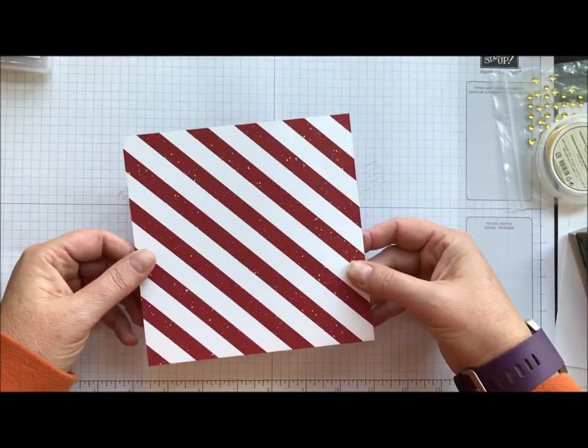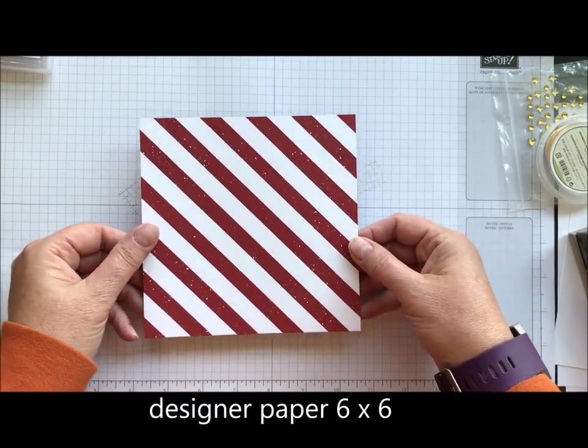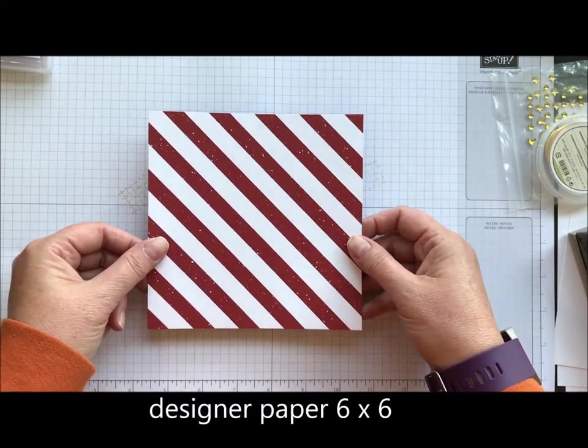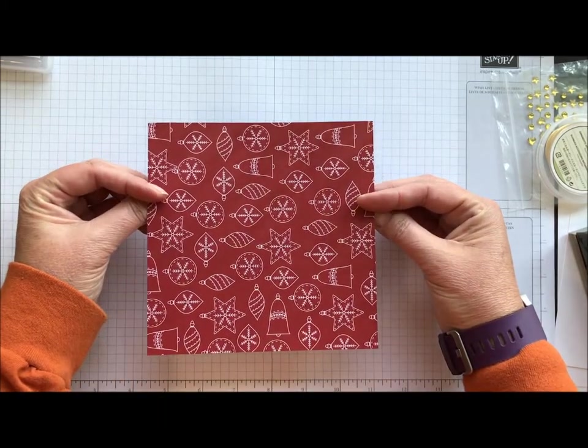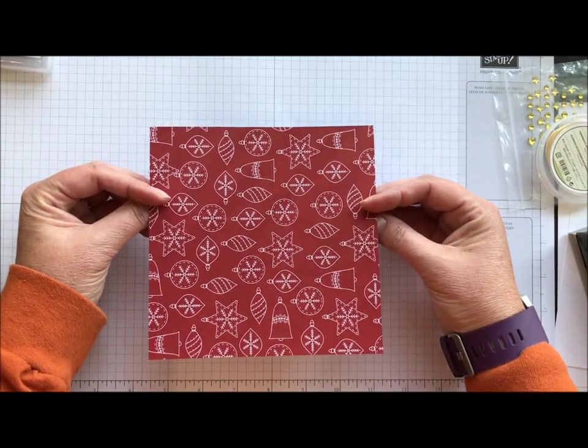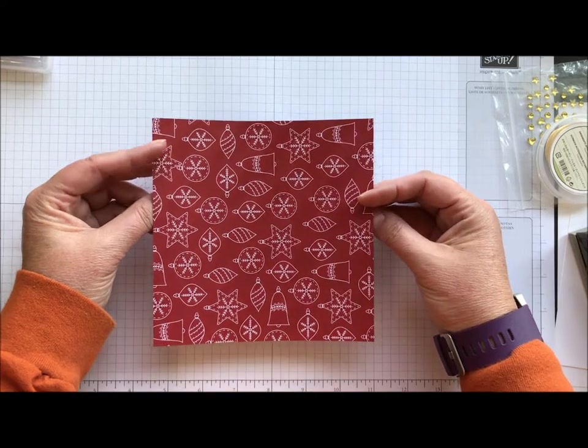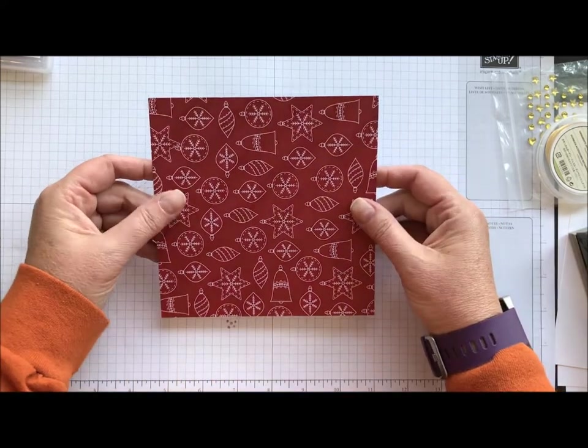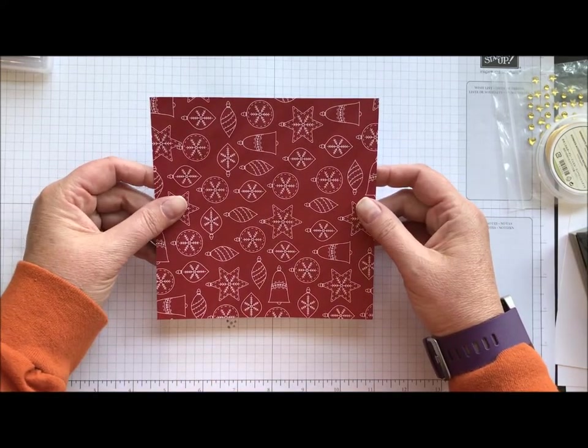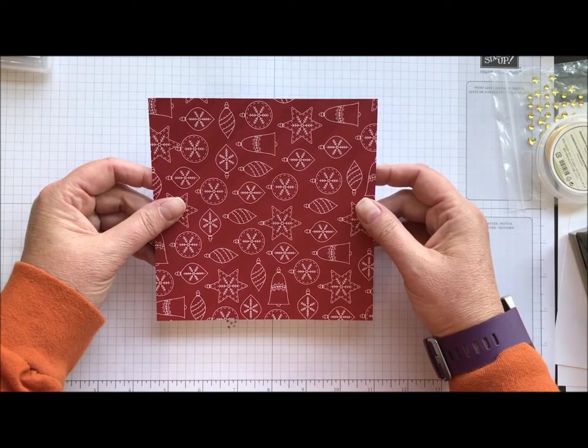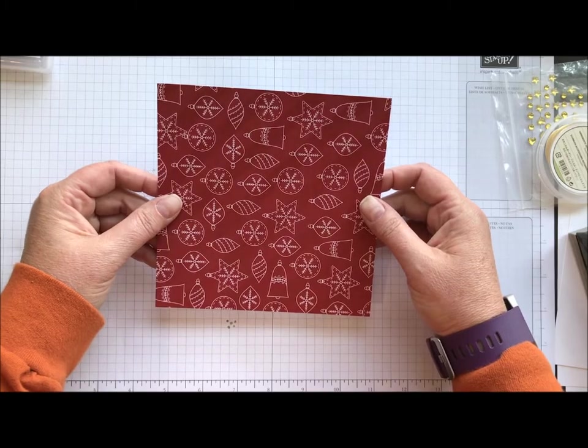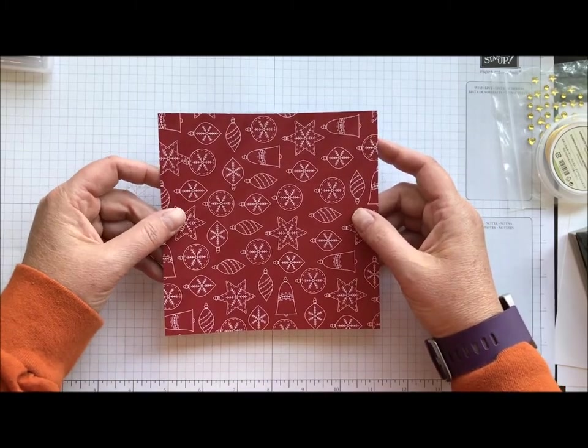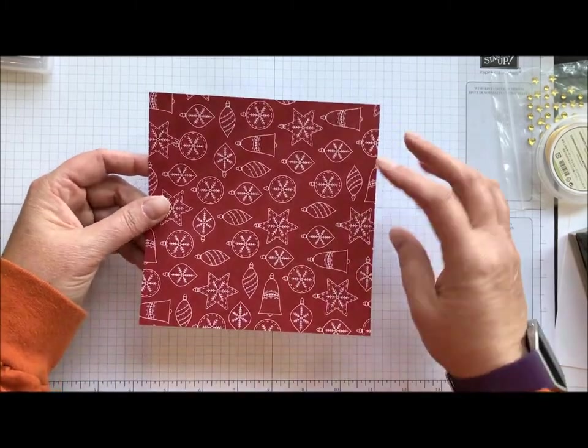So we're going to take a piece of 6x6 designer series paper and it can be any paper that you want. This happens to be the Be Merry Christmas paper that is in the holiday catalog. You can make any size of this treat holder just by using a square piece of paper. So if you need a bigger one just make an 8x8 or a 10x10 and it'll just keep getting bigger and bigger.